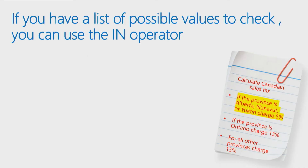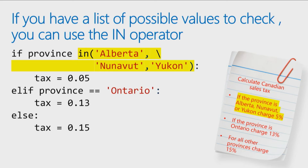If you have a list of values to check, there's a neat shortcut called the IN operator. It's for situations when you find yourself writing: if it equals this OR it equals this OR it equals this. There are actually three places in Canada with the same tax rate. So I can say: if province in [Alberta, Nunavut, Yukon], set the tax to 5%. I could have done that with an OR statement — perfectly valid — but I find the IN statement a little tidier. Effectively, they do the same thing.